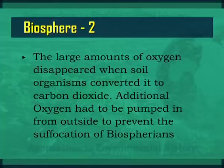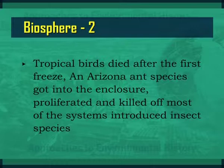Human and animal excrement and other wastes were treated and recycled to help support plant growth. This project faced many problems from its inception. Large amounts of oxygen disappeared when soil organisms converted it to carbon dioxide. Additional oxygen had to be pumped in from outside to prevent suffocation of the Biospherians. The nitrogen and carbon recycling systems too failed to function properly. High levels of nitrous oxide threatened the occupants with brain damage and had to be controlled externally. Further, high carbon dioxide levels spurred the growth of weedy vines that choked out food crops. Tropical birds died after the first freeze. An Arizona ant species got into the enclosure, proliferated and killed off most of the system's introduced insect species.